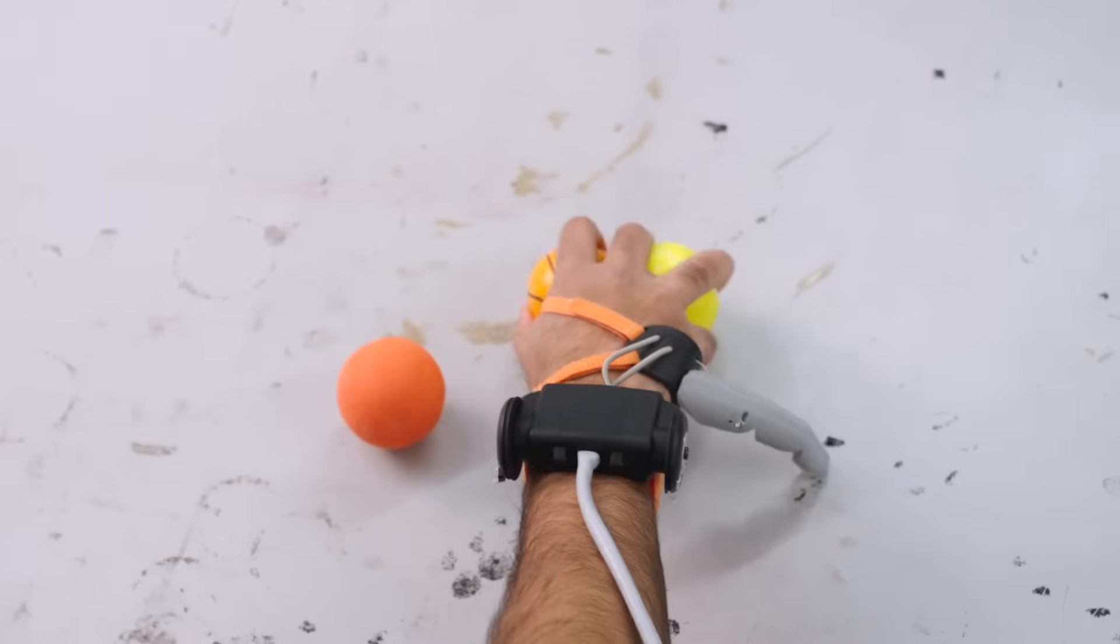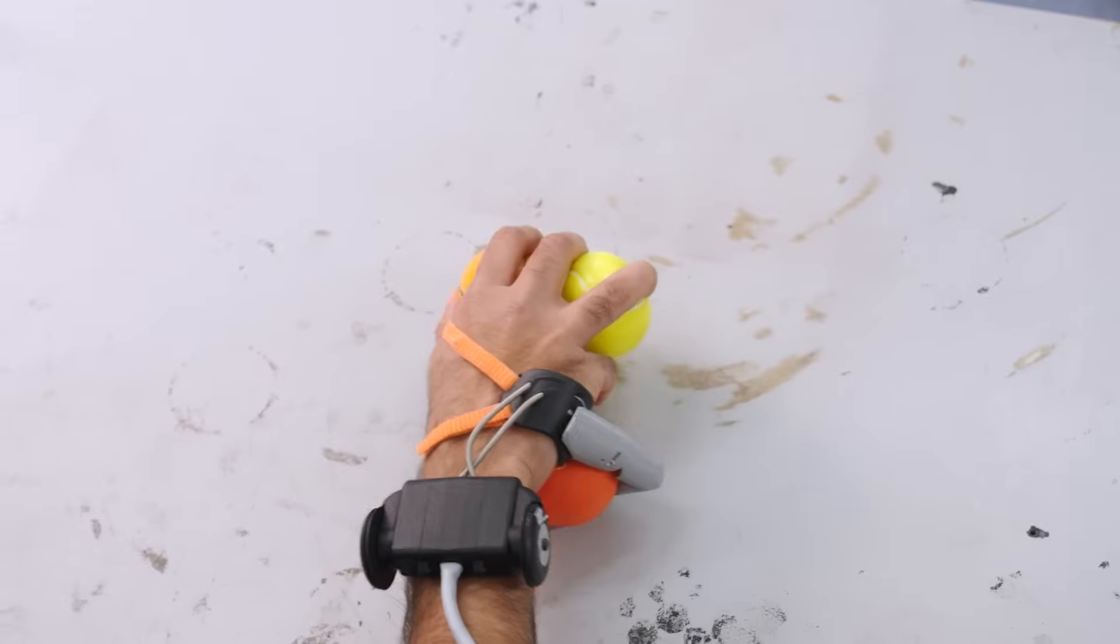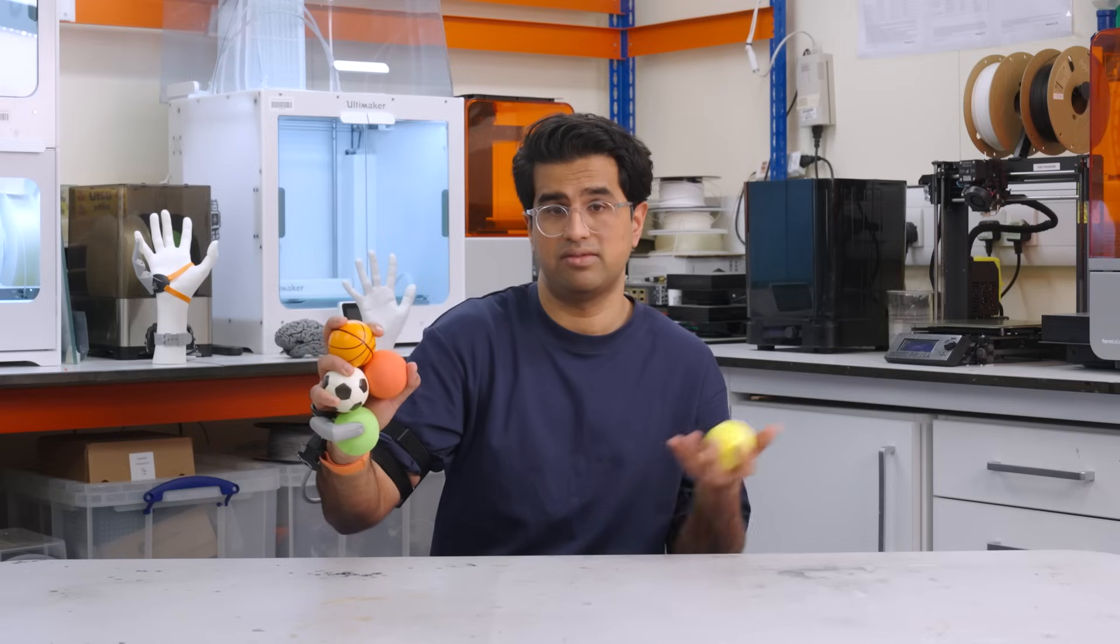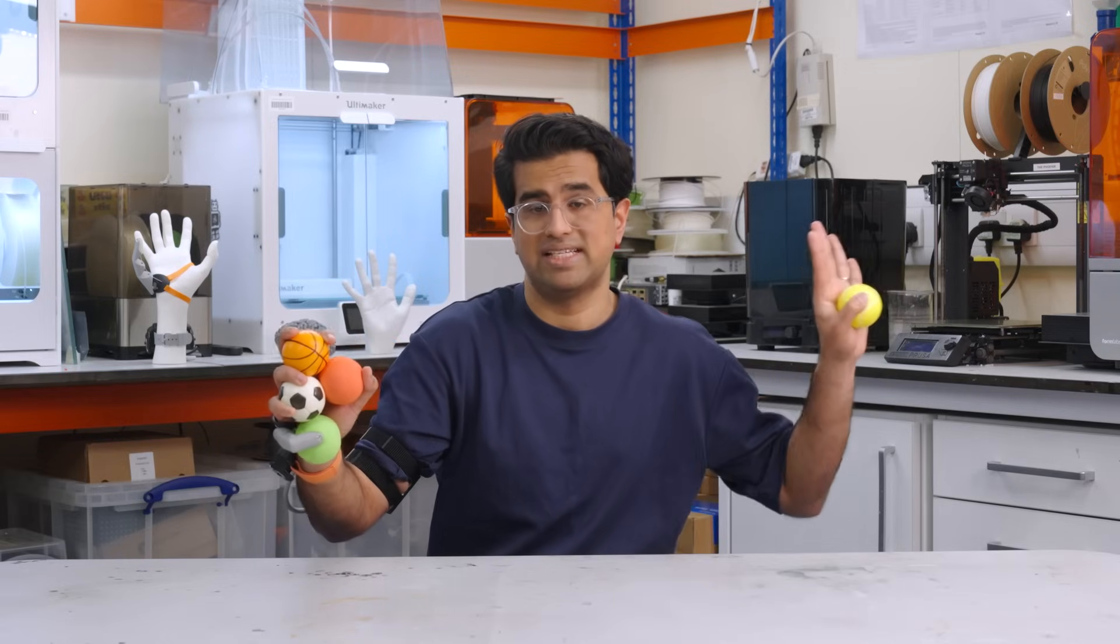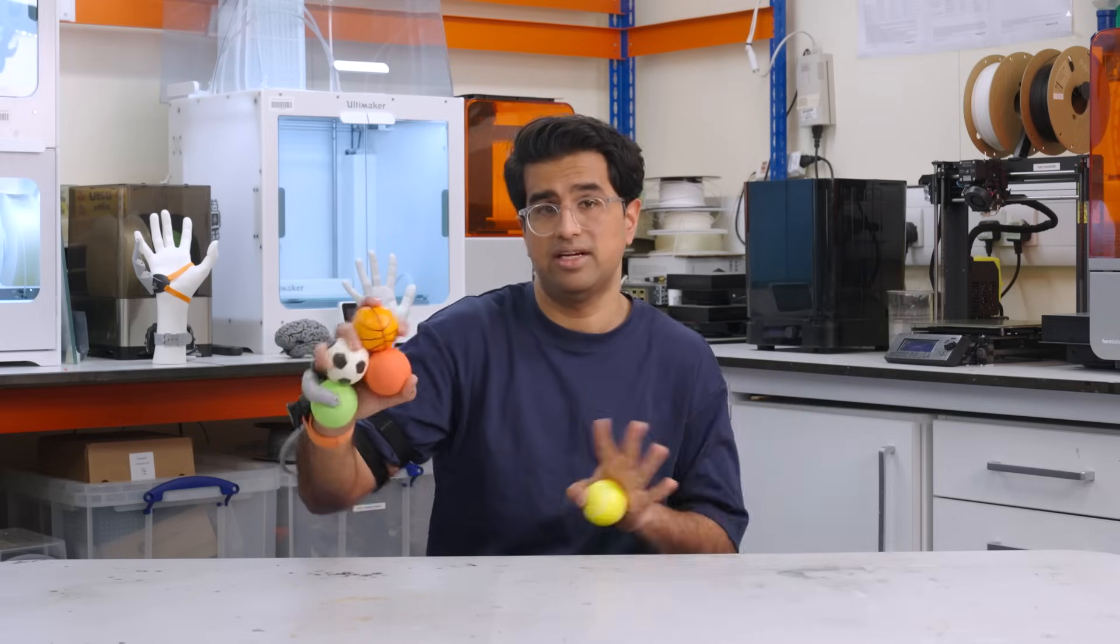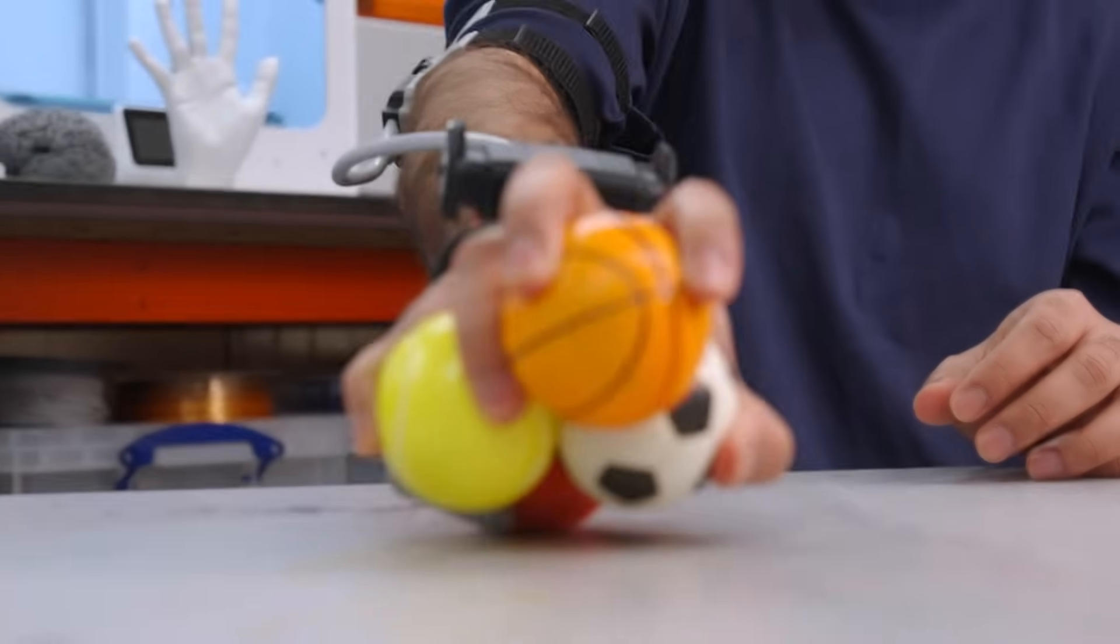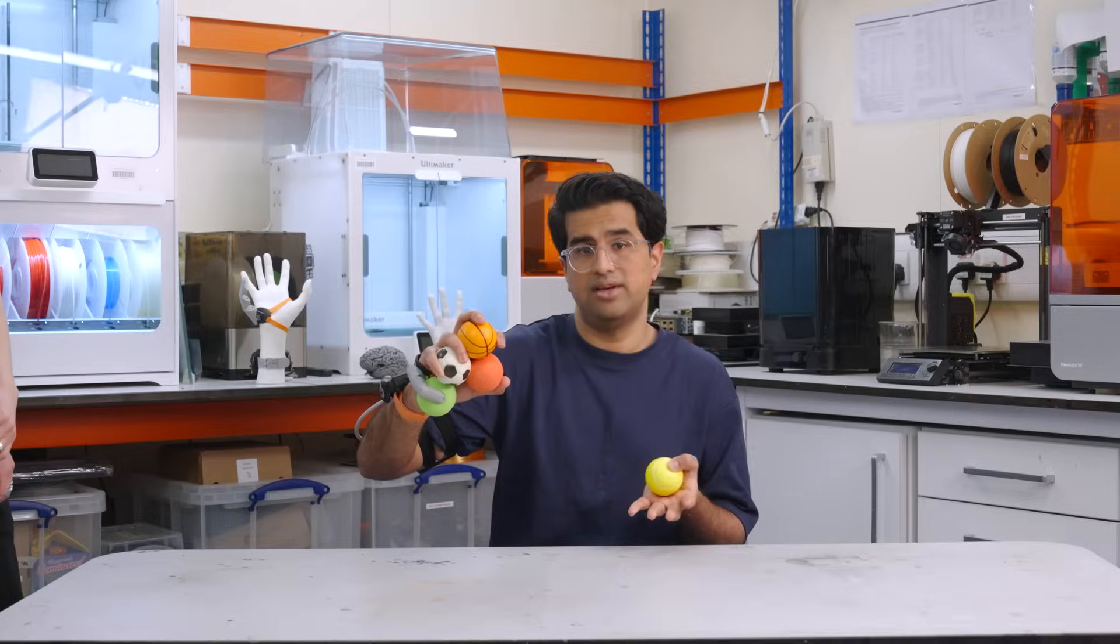I think when the hand is oriented away from you, you don't have that proprioception. You don't know where the hand is situated in space, whereas with your own fingers, you know exactly where they are even when you're not looking at them. That's one challenge, orienting the hand in relation to the object you're picking up without being able to see where the thumbs are.